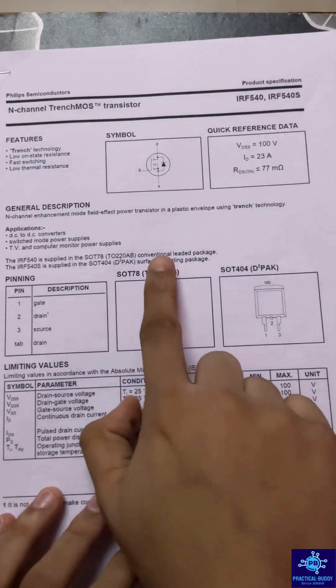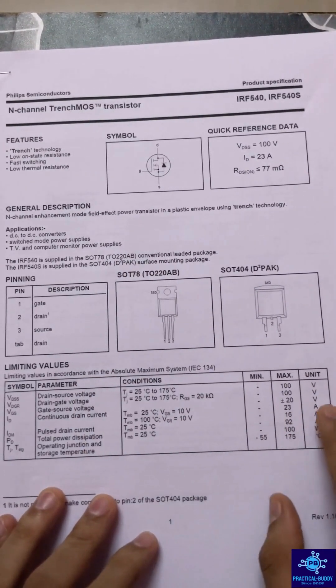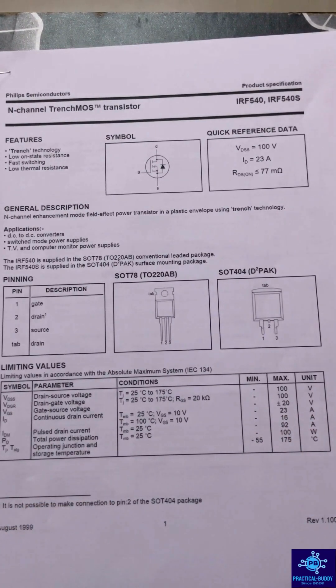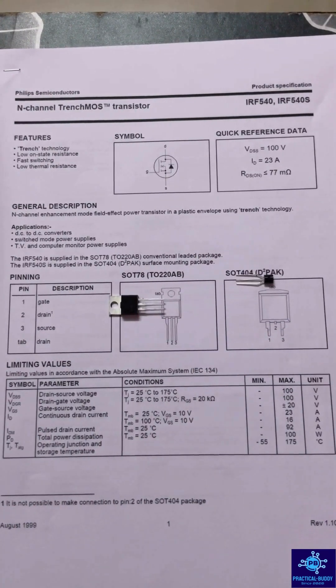it has been clearly mentioned that this is a power transistor. Secondly, if you look, it can handle current up to 23 amperes, and power dissipation would be around 100 watts. So basically, this is our power MOSFET and this is our normal MOSFET.